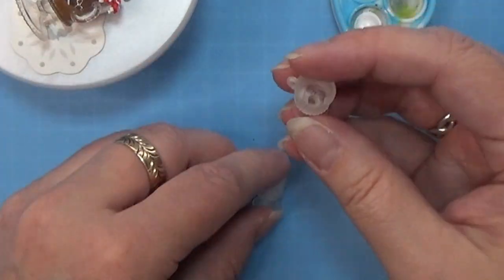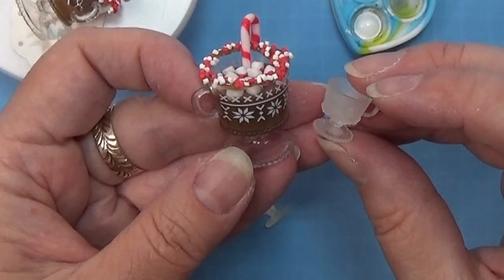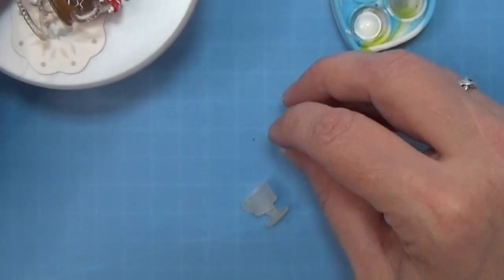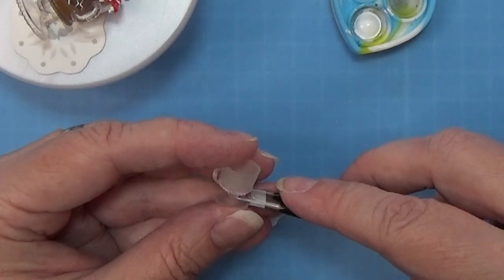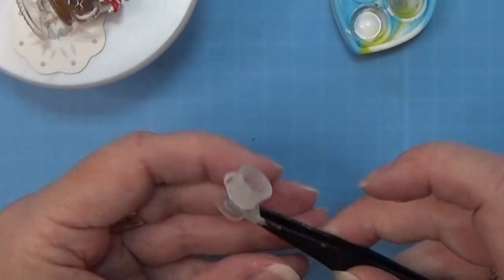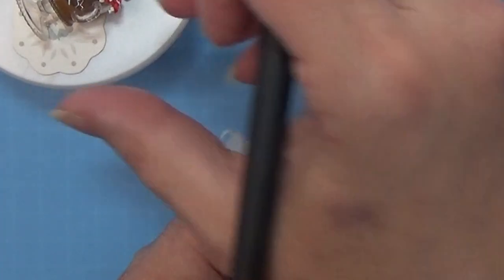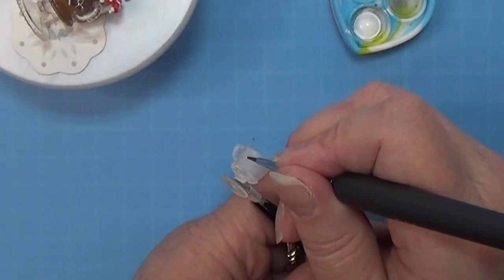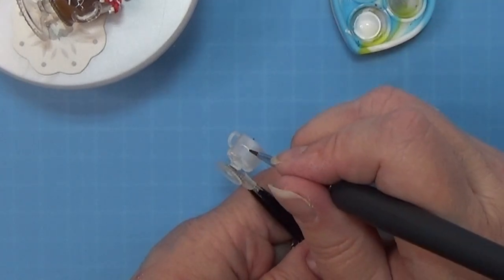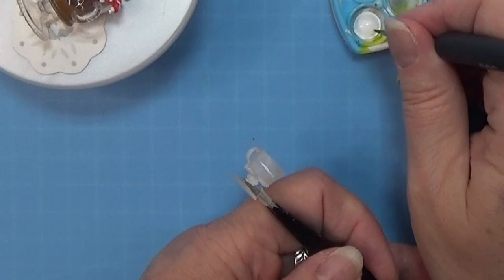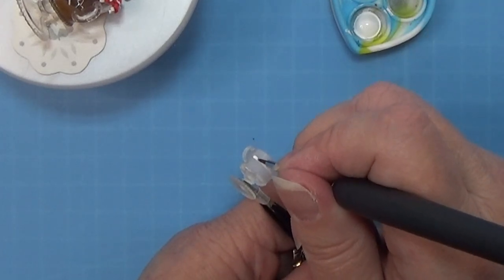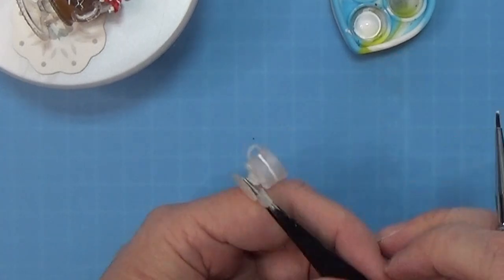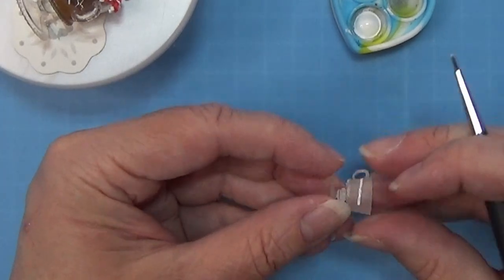So I took my time and designed these cups here in Fusion 360 and I printed them on my resin printer. I have an Anycubic Photon Mono SE. So if you have a resin printer, you can print these. If you don't have a resin printer, you can find some cups online on eBay or AliExpress in 1 to 12 and you can use one of them instead. I designed to decorate mine just like the cups from the Miniverse are decorated. They have some snowflakes and stuff like that on.